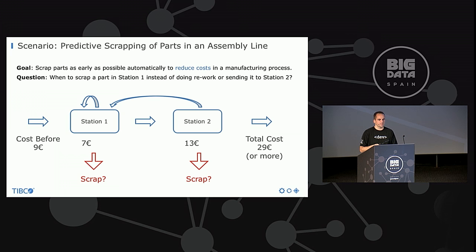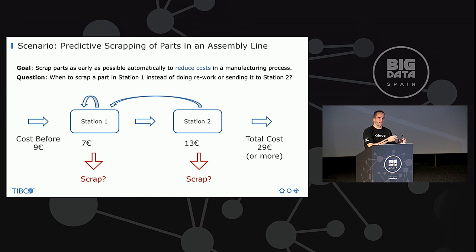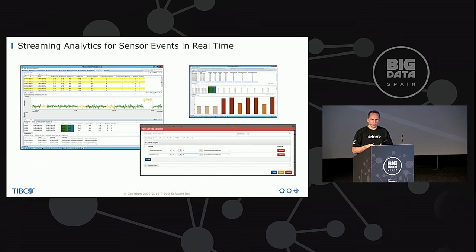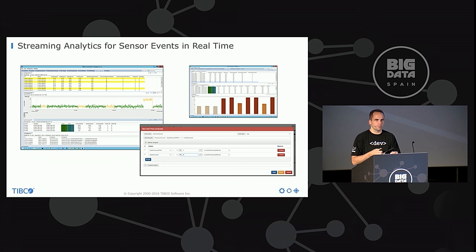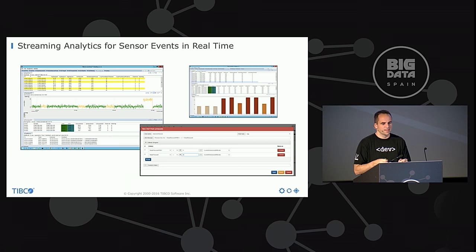In manufacturing and assembly lines, they previously decided by gut feeling when to scrap parts. You have different stations, each costing a lot of money, and the part moves to the next station — sometimes you have to put it back for rework. You want to decide when to scrap a part, and for that you have to continuously analyze events to make these decisions. On top of that you have a live UI so the human can monitor and proactively act if a machine breaks — stop it or send a mechanic.